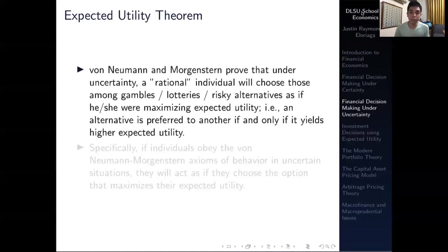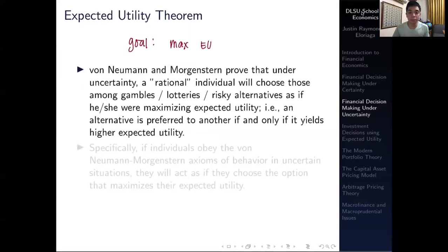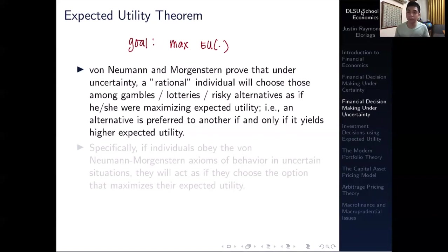Now let's get into the heart of this lecture — the expected utility theorem. Von Neumann and Morgenstern proved that under uncertainty, a rational individual will choose among gambles or risky alternatives as if he or she wants to maximize expected utility. The goal of a consumer is to maximize expected utility. An alternative is preferred to another if and only if it yields a higher expected utility — that is what a typical rational consumer would do.